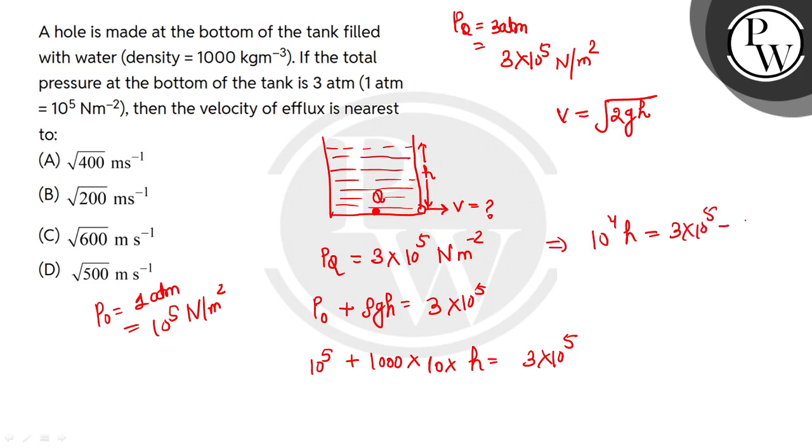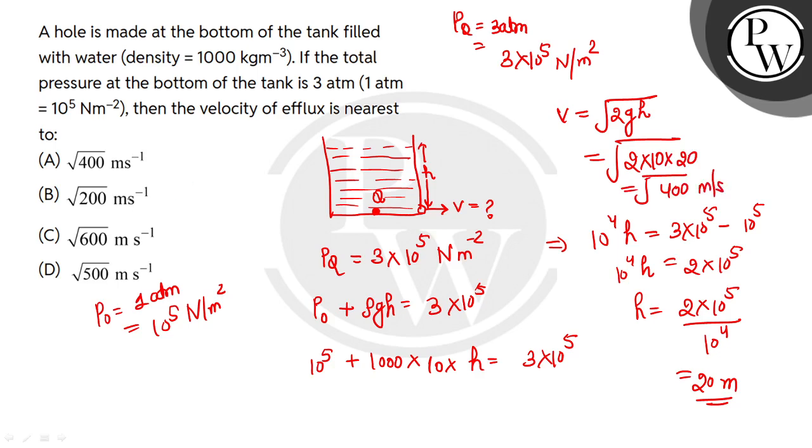This will equal 2 into 10⁵ N per meter square. Then H value is 20. So this is square root of 400, square root of 400 meter per second, which we can see is option A given. So option A would be the correct answer. I hope you understand. Thank you so much.